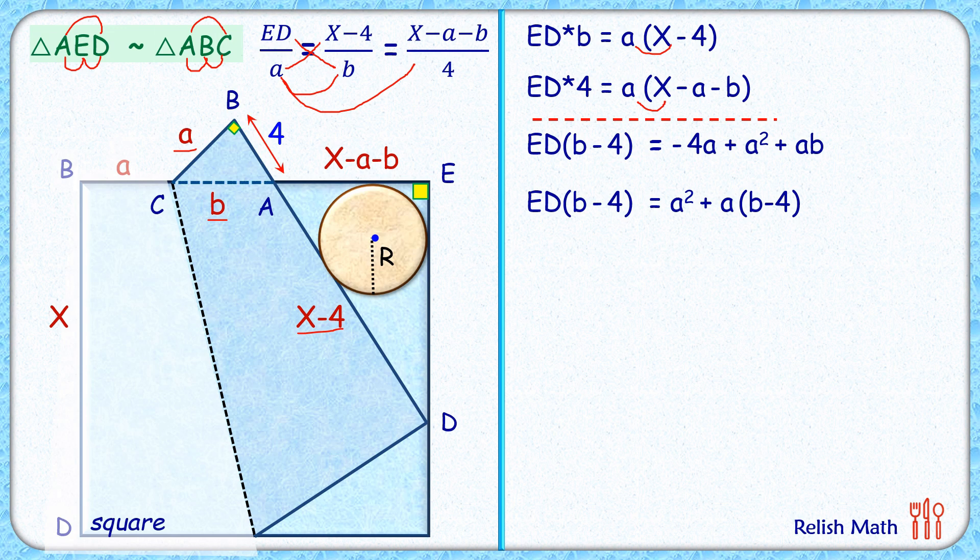We'll get this equation. How about a²? If we look at this triangle, it's a right angle triangle. Applying Pythagorean theorem, we'll get b² = a² + 4². Thus a² is nothing but b² - 4². So this value we'll put here.